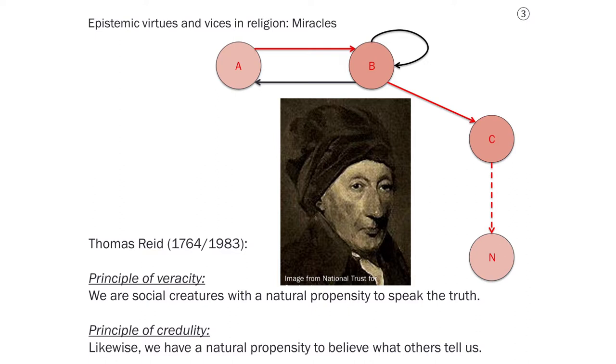And interlocking with this, Reid argued for the principle of credulity. He said, because people observe the principle of veracity, we likewise have a natural propensity to believe what others tell us and that this is correct. Because after all, if others are observing the principle of veracity, then it only makes sense as a receiver, as someone in the position of person B in the network shown here, to believe what they say.